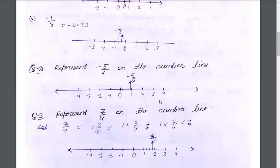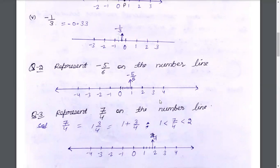Minus 1 upon 3: this will come as minus 0.33, meaning 0.33. Minus 1 upon 3 will be placed after 0, at 0.33 on the left side of 0.